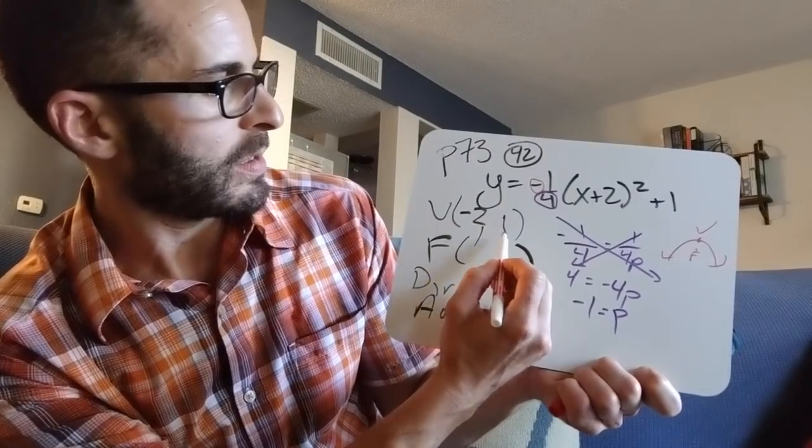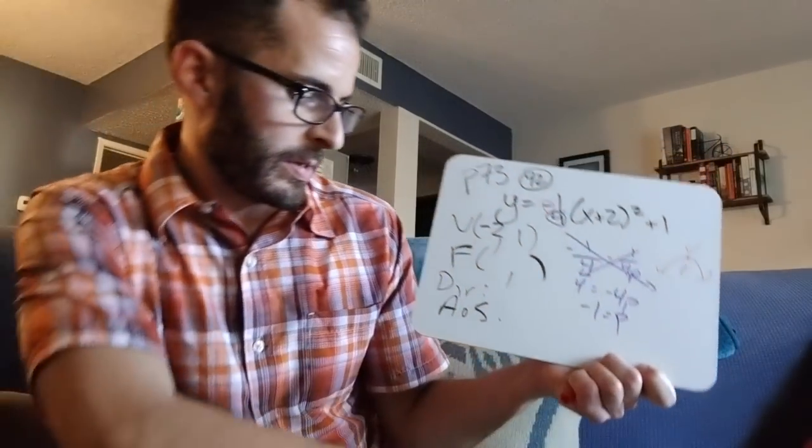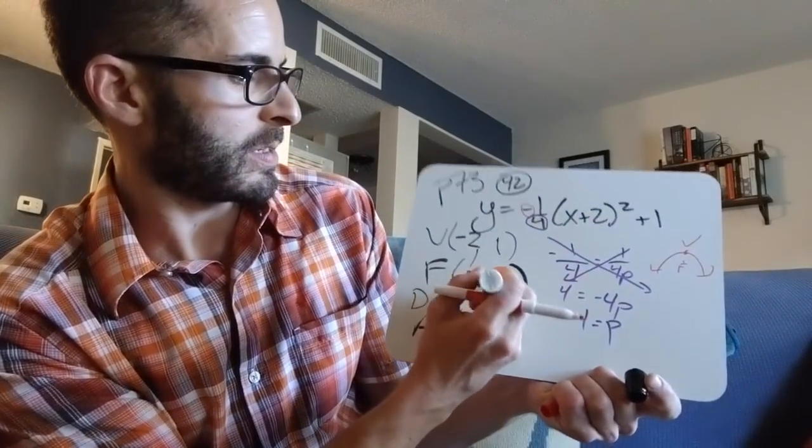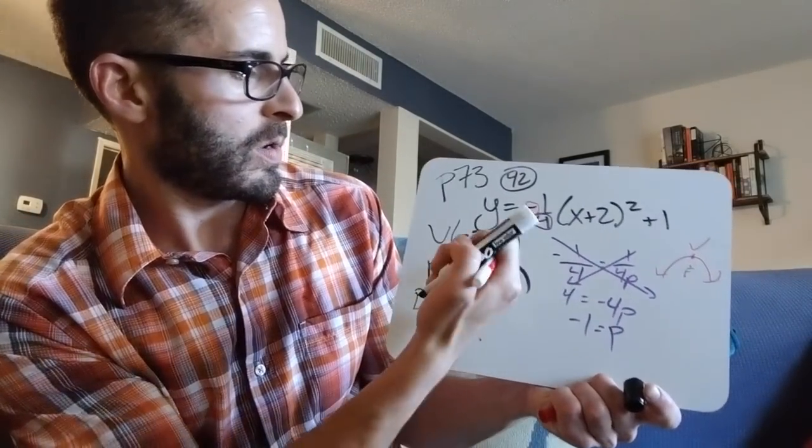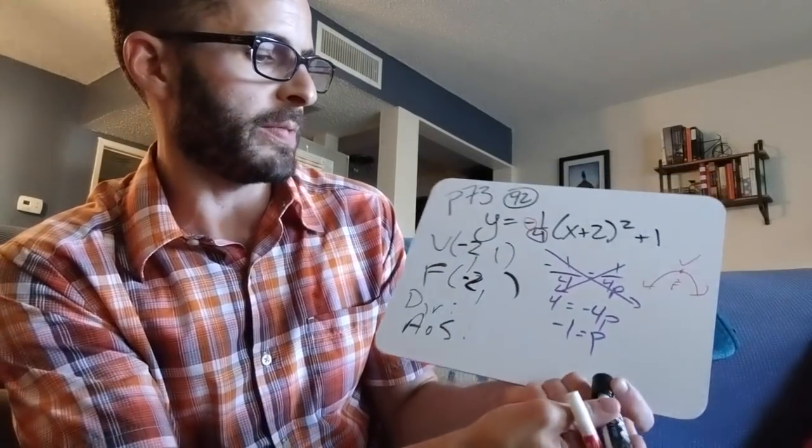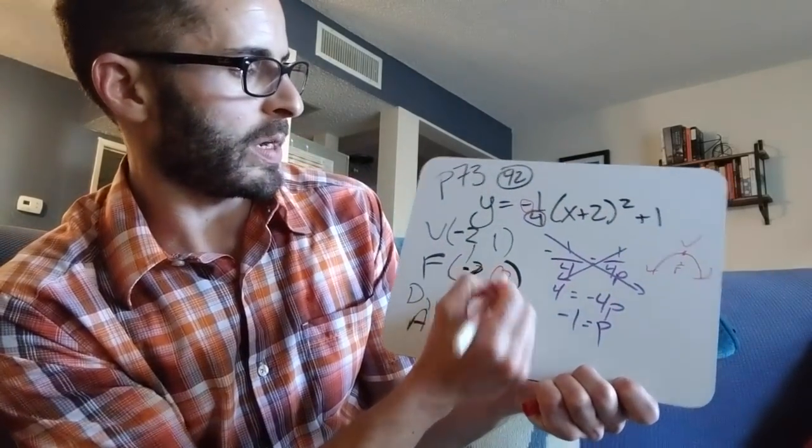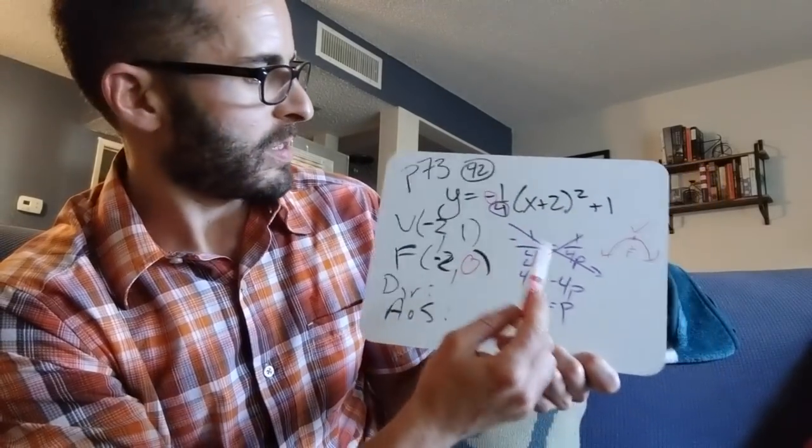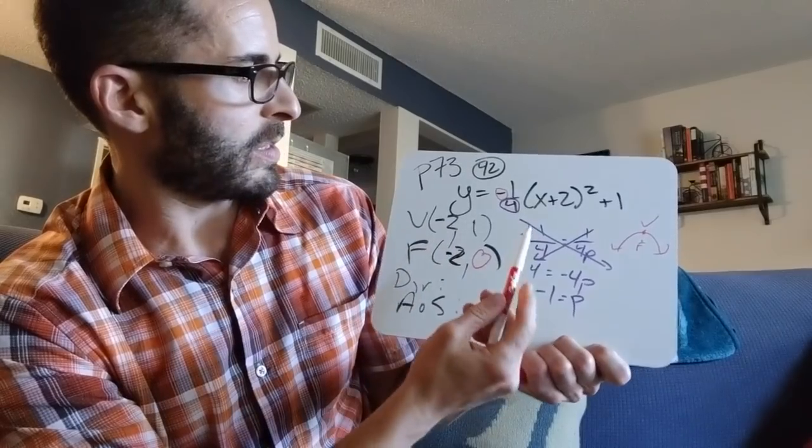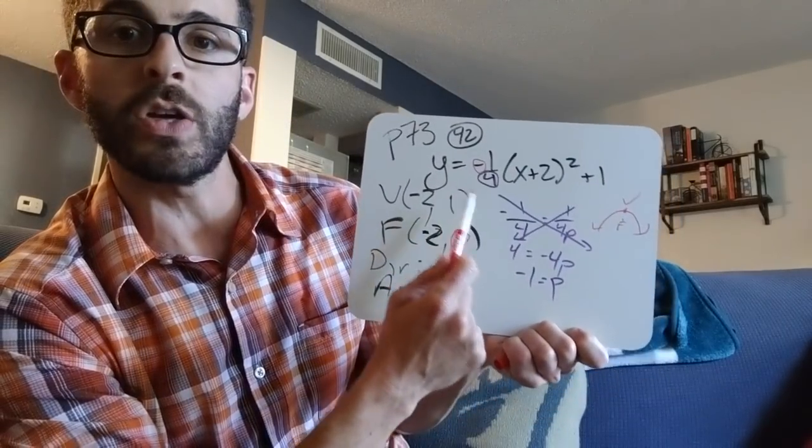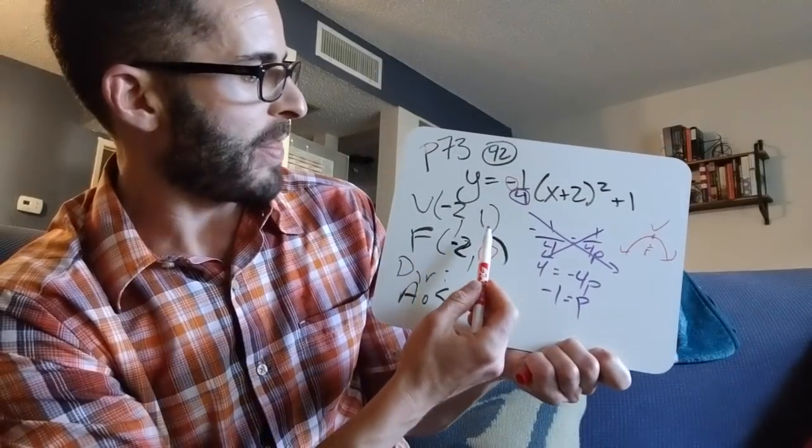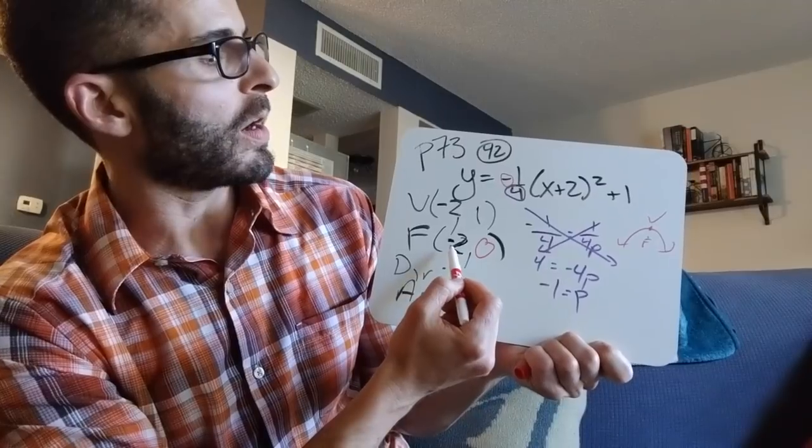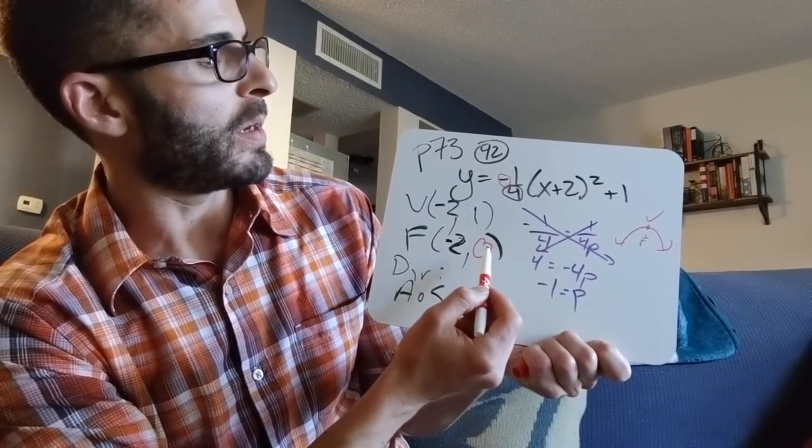What is down one from negative two one? Well, it's still negative two in the x. But here, we're going to do one minus one. And we're going to get zero. So there's many different ways you can look at it. But you need to remember where the vertex is, you need to think about the direction the parabola is going, this is going down, and then you have to go down from the vertex by one. So our focus is at negative two comma zero.